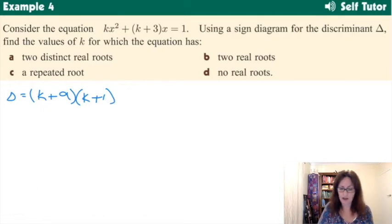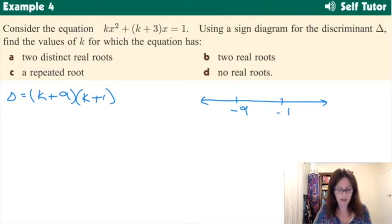So to draw a sign diagram, here we are, we've got our values of negative 9 and negative 1. Just having a think about what have we done here, this is the discriminant. And if the discriminant is greater than 0, we would have two distinct real roots. If the discriminant is equal to 0, we would have one repeated root, and less than 0, no real roots.